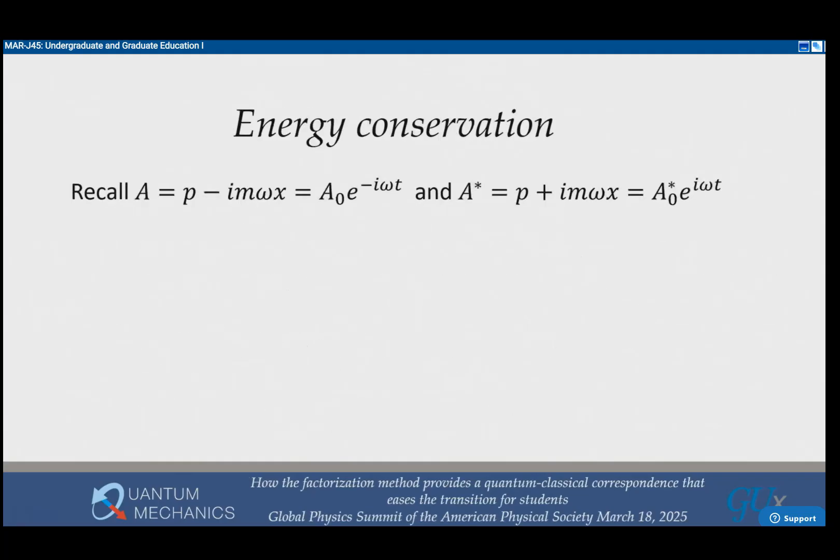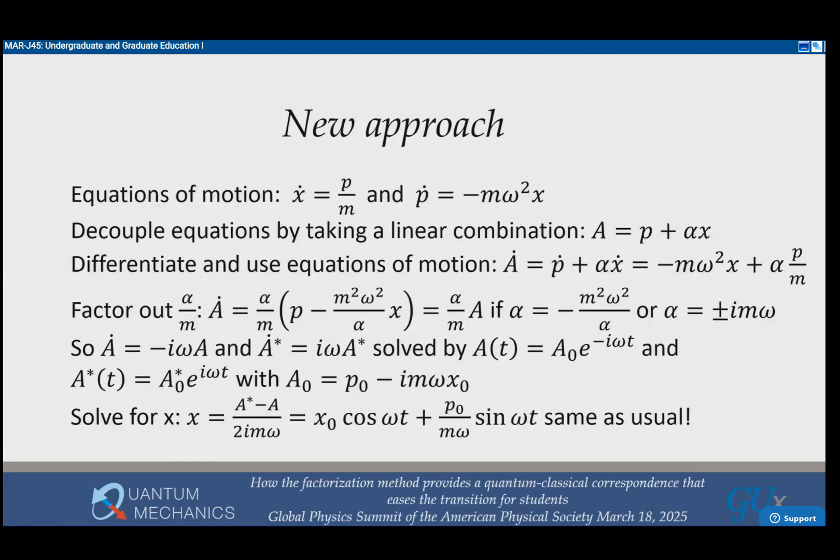You can solve for X. We don't take the real part like you often teach. You solve for X: the imaginary part of A divided by M omega equals X, and when you do that, you get exactly the result you normally get in classical mechanics.